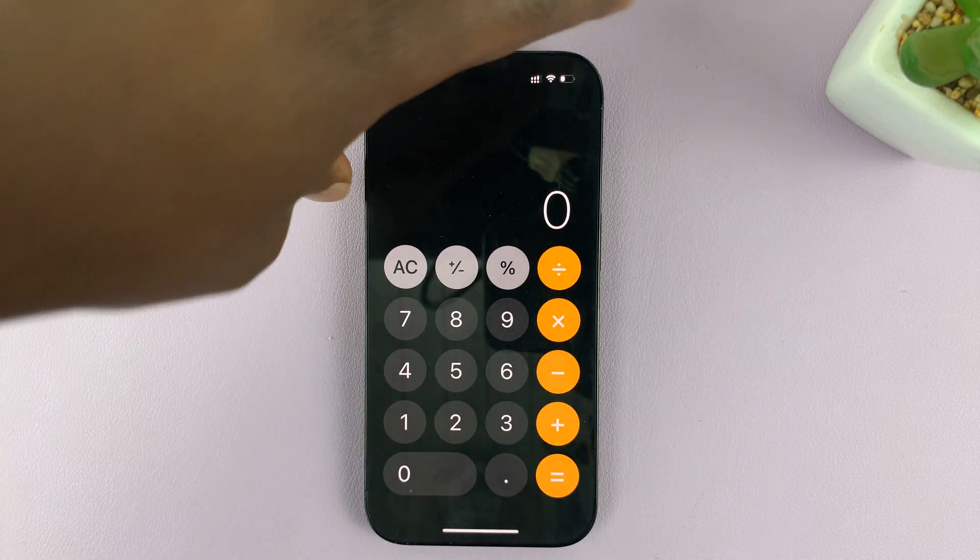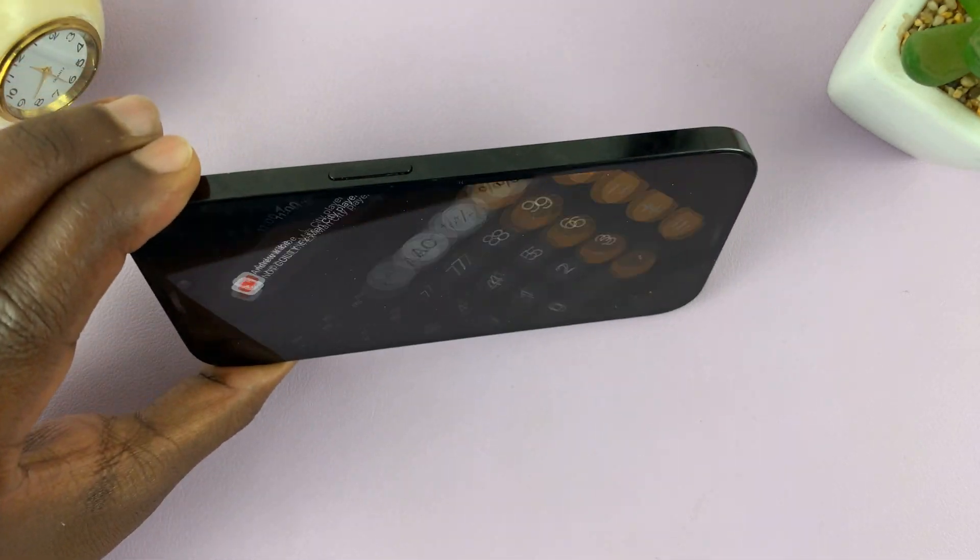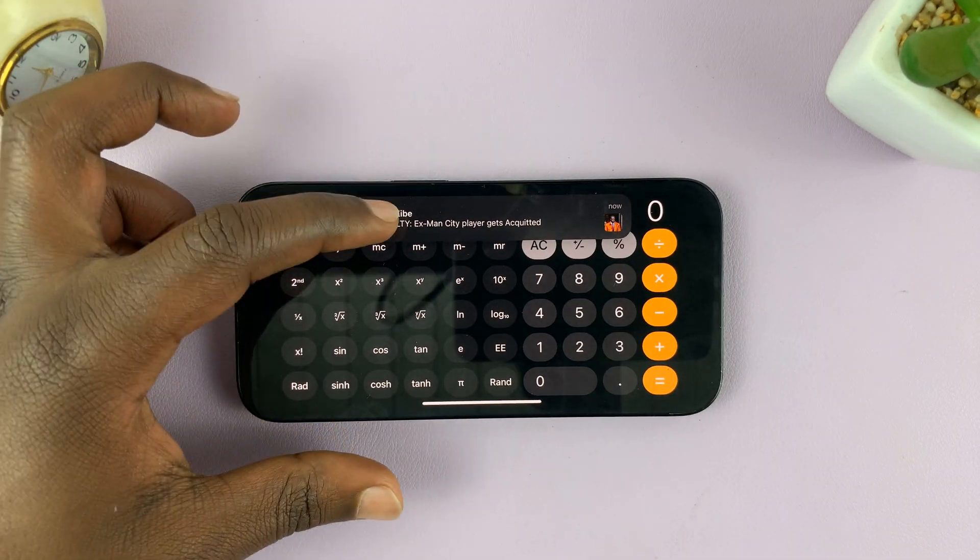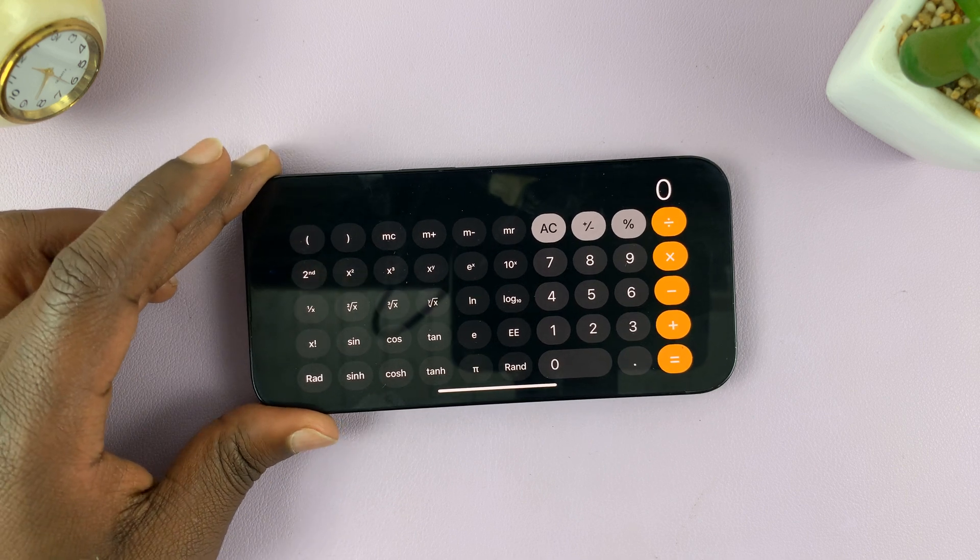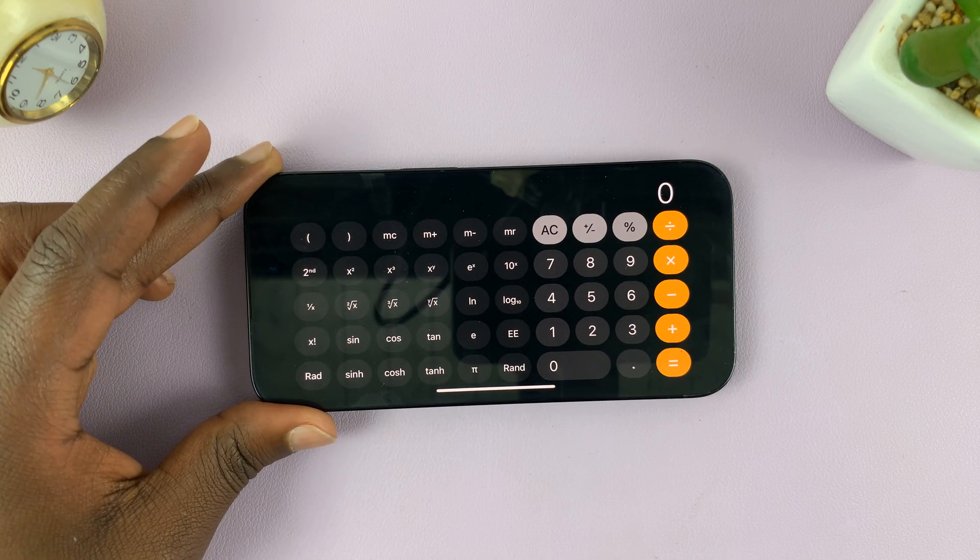So with that enabled, you can now take your iPhone and flip it like that. That's going to open the scientific calculator, which you can use to calculate square roots.